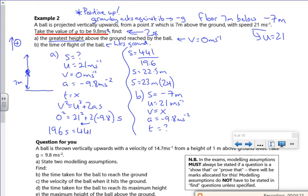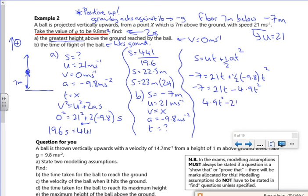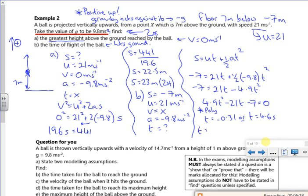So I choose the one without V. So S equals UT plus a half A T squared. You're given the equations, but I'm just using them. So minus 7 is 21 times T plus a half minus 9.8 T squared. So minus 7 is 21T minus 4.9T squared. I've got a quadratic here now. So I've got 4.9T squared minus 21T minus 7 is 0. If I use the calculator, it gives me T as minus 0.31, or T is 4.6. I want T greater than 0. So T is 4.6 seconds.